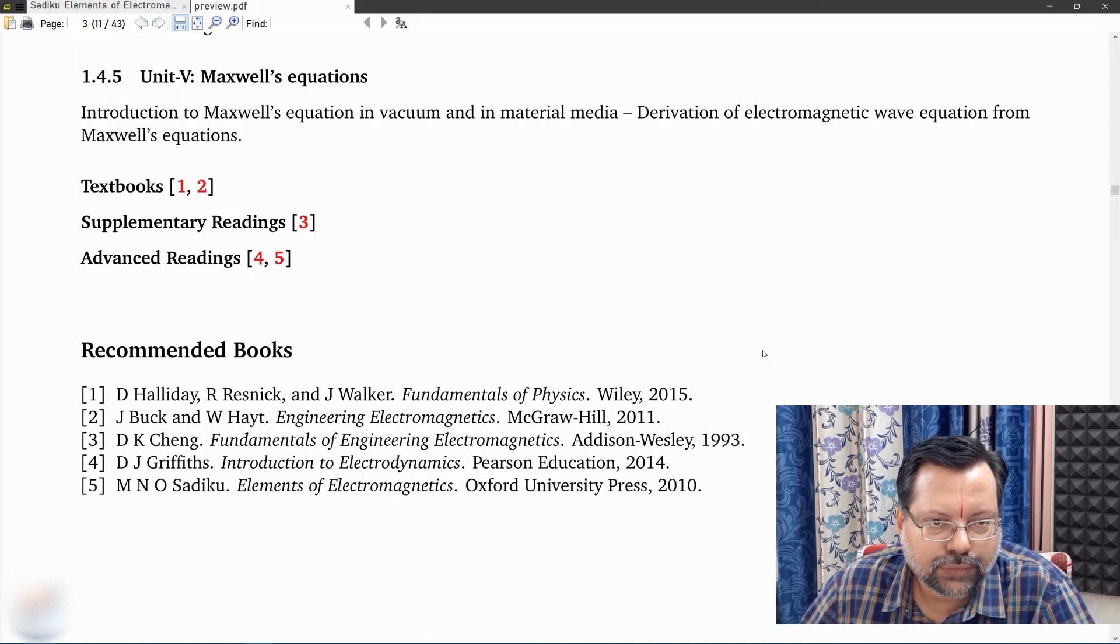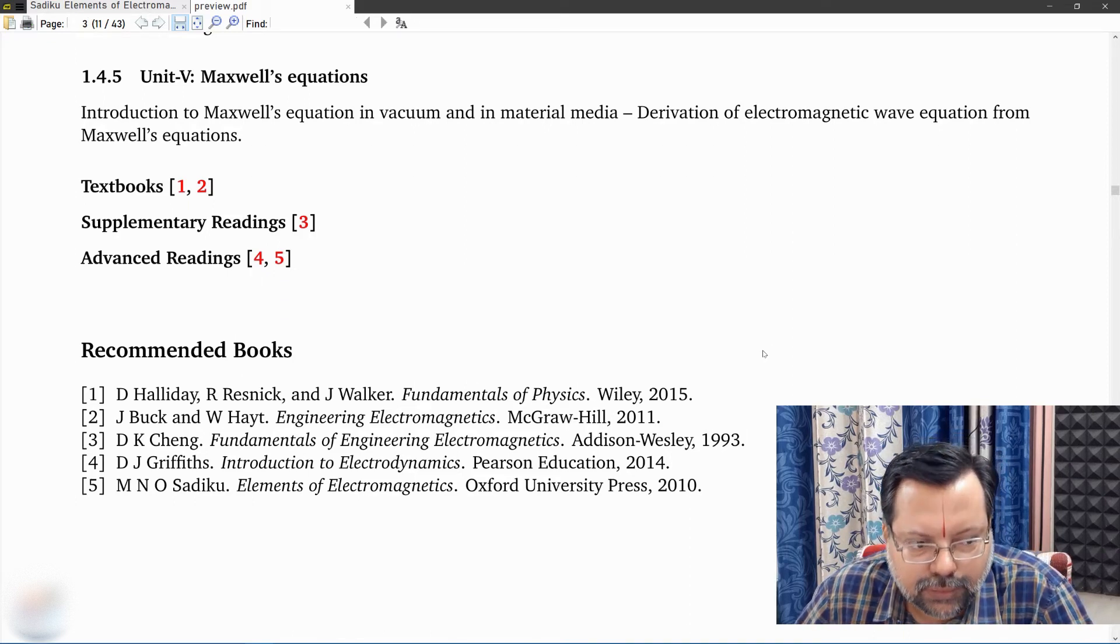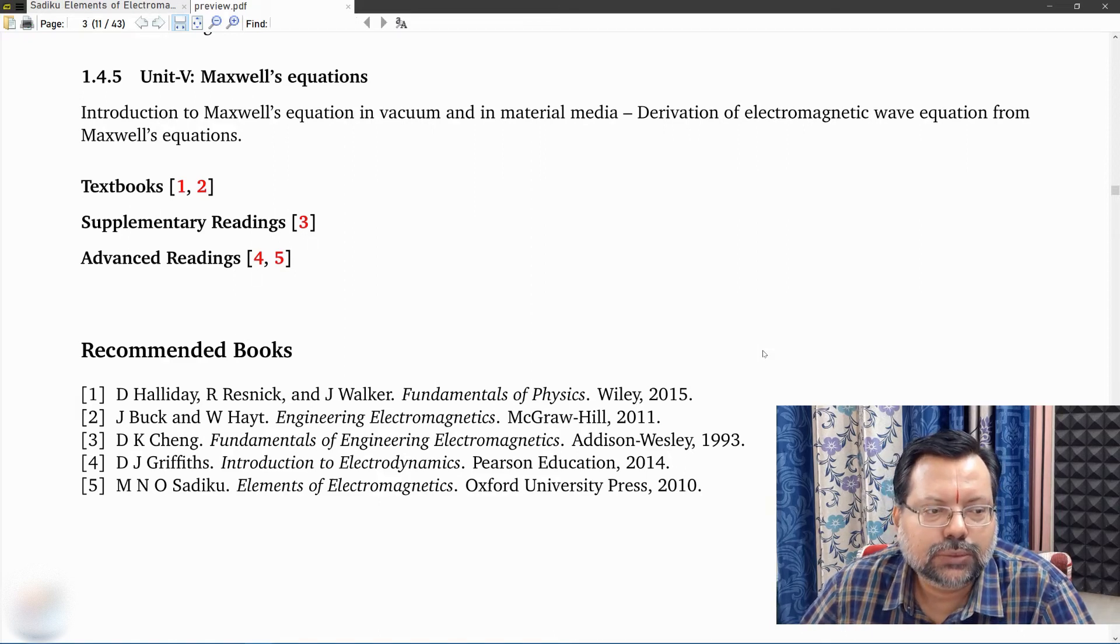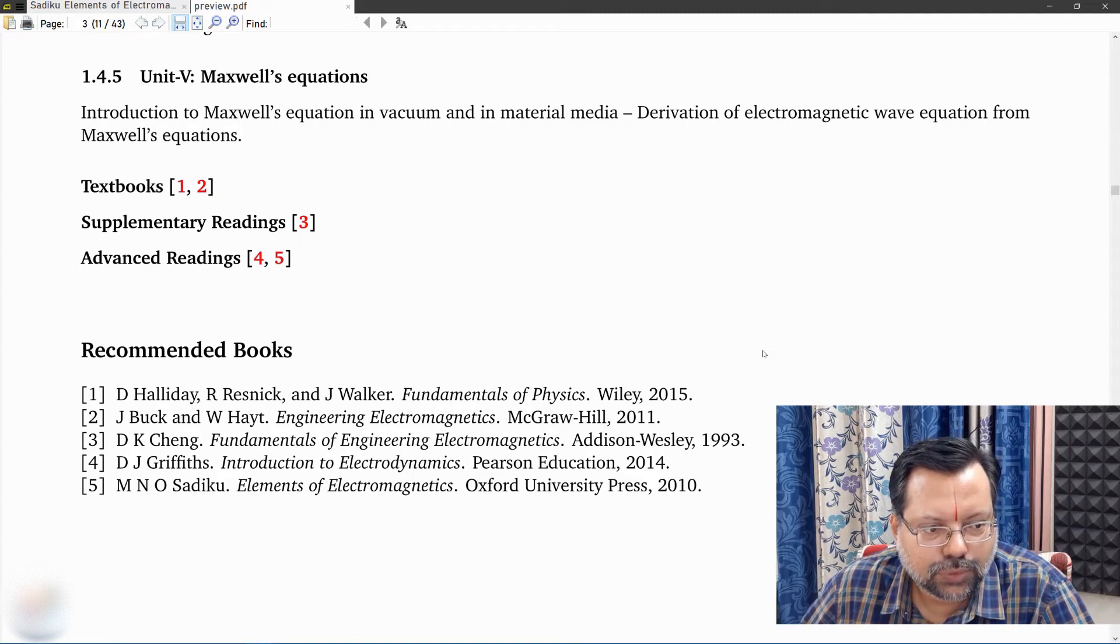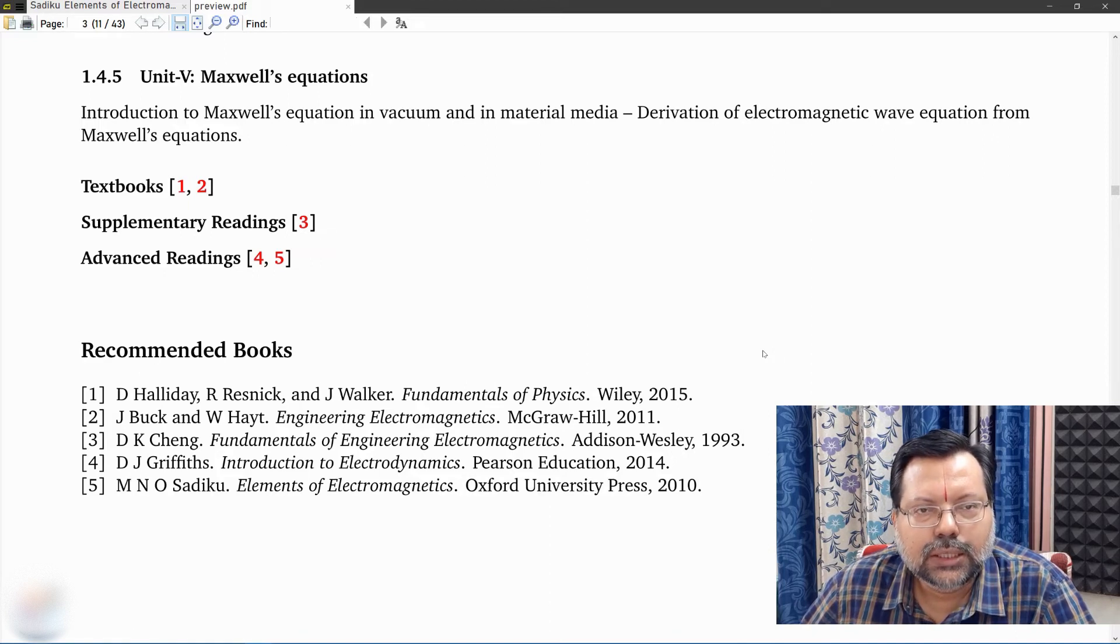The fourth book and the fifth book are a little bit advanced, but however, they are also meant for undergraduates. So remember that all five books shown here are meant for undergraduate students. I am going to use the last book, so you can see the author name is Sadiku, and the title of the book is Elements of Electromagnetics.